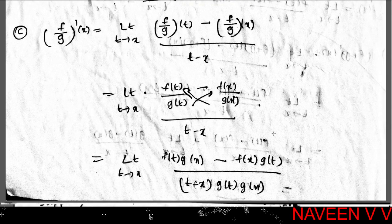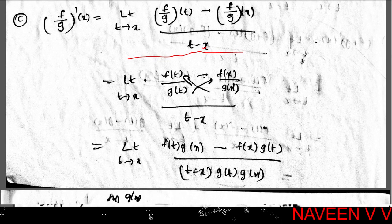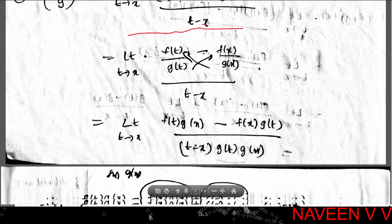To show f/g is differentiable at x, we need limit t→x of [(f/g)(t) - (f/g)(x)] / (t - x) to exist. By definition, (f/g)(t) = f(t)/g(t) and (f/g)(x) = f(x)/g(x). Cross multiplying gives: limit t→x of [f(t)·g(x) - f(x)·g(t)] / [(t - x)·g(t)·g(x)].